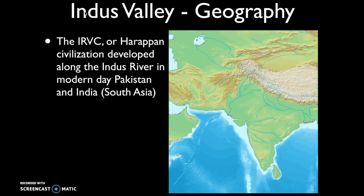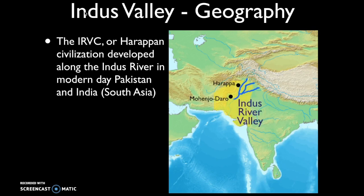The Indus River Valley civilization, also called the Harappan civilization, developed along the Indus River in modern-day Pakistan and India in the region of South Asia. India and Pakistan are part of the Indian subcontinent, which is somewhat isolated by the presence of the Himalayan mountains. The civilization formed cities like Mohenjo-Daro and Harappa — that's why it's sometimes referred to as the Harappan civilization.